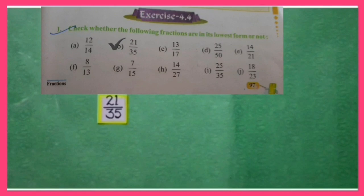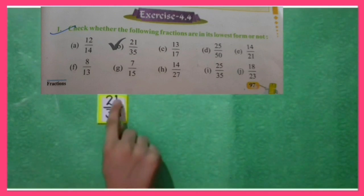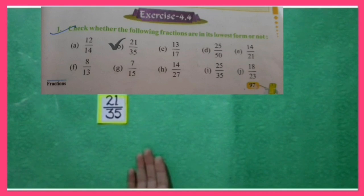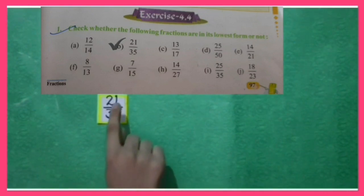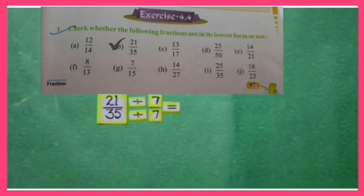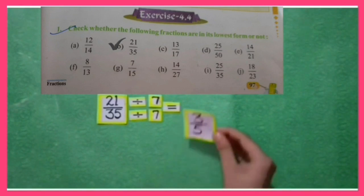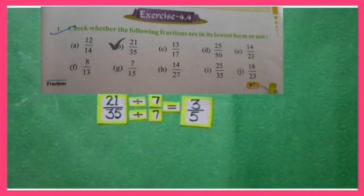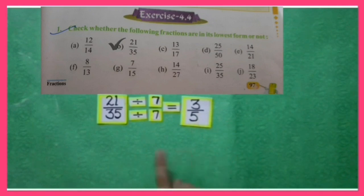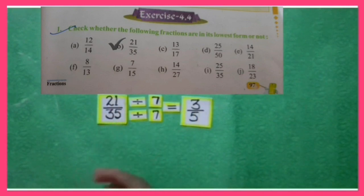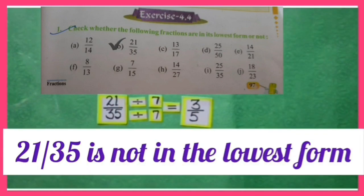Now we will solve part B of question number 1: whether 21 upon 35 is in its lowest form. In 21 upon 35, both 21 and 35 are divisible by 7 other than 1. So, on dividing by 7, we get the fraction 3 upon 5. In 3 upon 5, both 3 and 5 are not divisible by any number other than 1. So 3 upon 5 is the lowest form of 21 upon 35, which means 21 upon 35 is not in the lowest form.